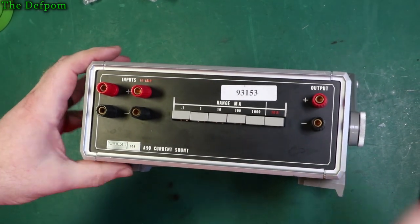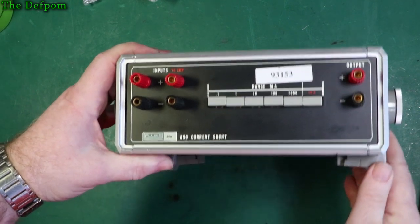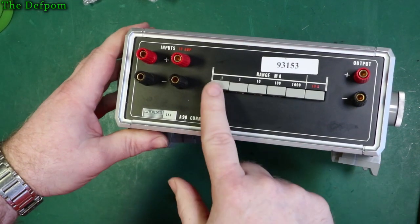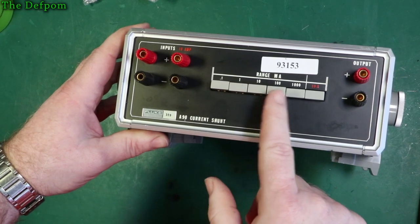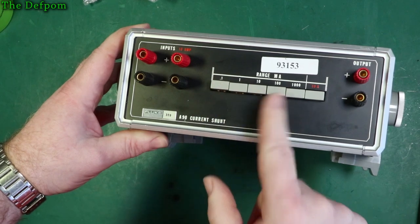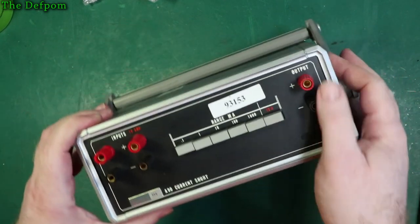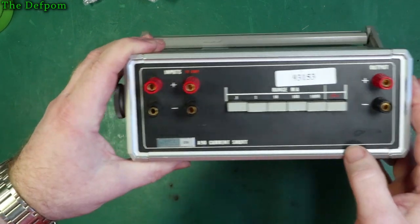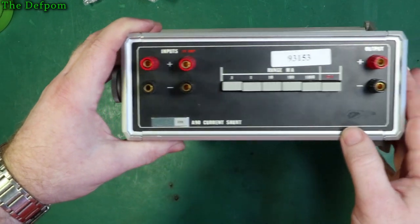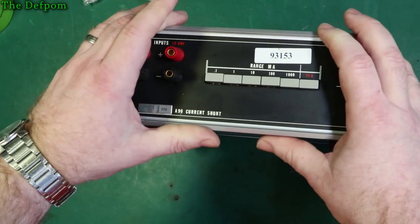So basically, it's a current shunt from Fluke. So it's got a range of 0.1, 1, 10, 100, 1000, and 10 amps. So that's obviously milliamps. So it's got different shunts for different ones, and they give a fixed output here, proportional. Basically a four wire measurement system. There's actually a manual for this online as well.